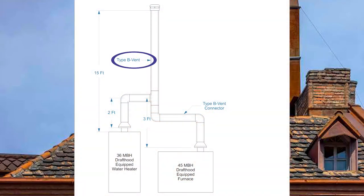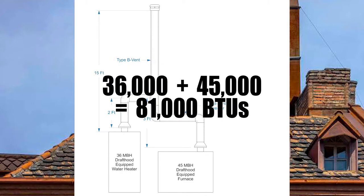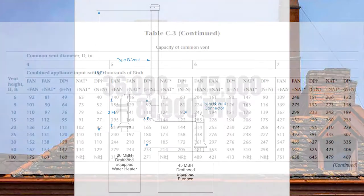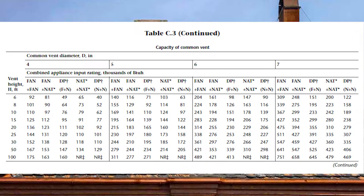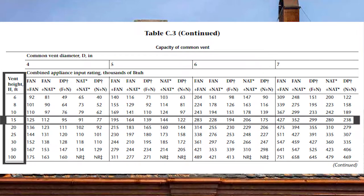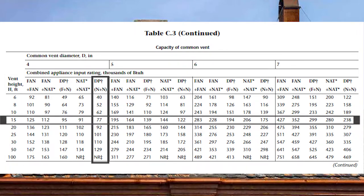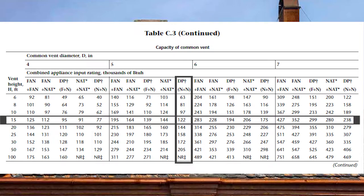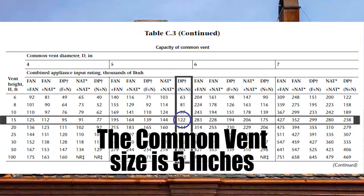Now for the second part we need to size up the common vent, but first we need to add up the total BTU load: 36,000 plus 45,000 equals 81,000 BTUs. Turning to page 200 in the codebook to size up the common vent using table C3, I come down to the 15-foot vent height and across to DP N plus N in the four-inch column — only good to 77,000 BTUs. Moving to the five-inch column at DP N plus N, that's good to 122,000 BTUs. The size of our common vent will be five inches.